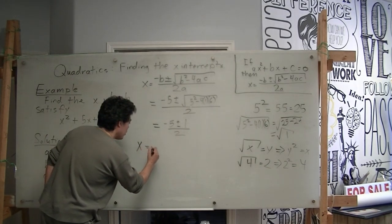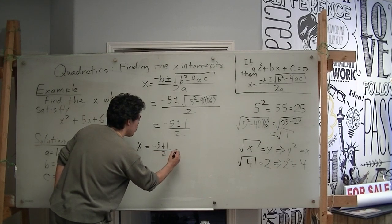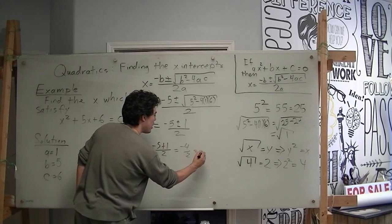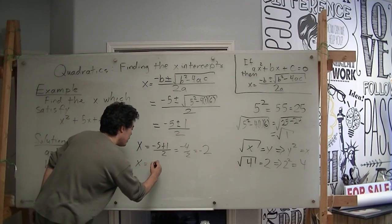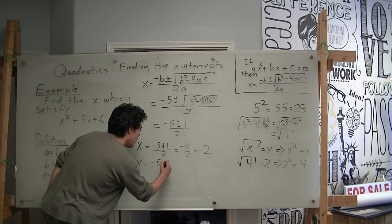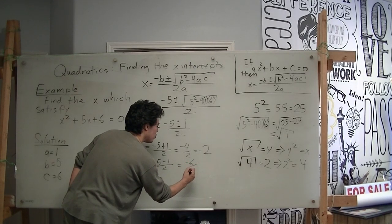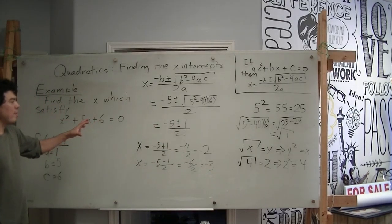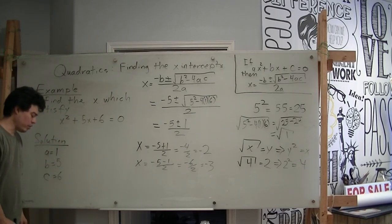x will equal negative 5 plus 1 over 2, which will be negative 4 over 2, which will equal negative 2. And x will equal negative 5 minus 1 over 2, which will equal negative 6 over 2, which will equal negative 3. And so now these two are the roots of our equation, or the x-intercepts of our quadratic equation.